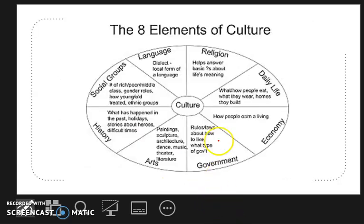What are the eight elements of culture? Culture is divided into eight elements. We need to consider language or dialect, the local form of a language. Religion helps answer basic questions about life's meaning. Daily life: how people eat, what they wear, how they build homes. Economy: how people earn a living.